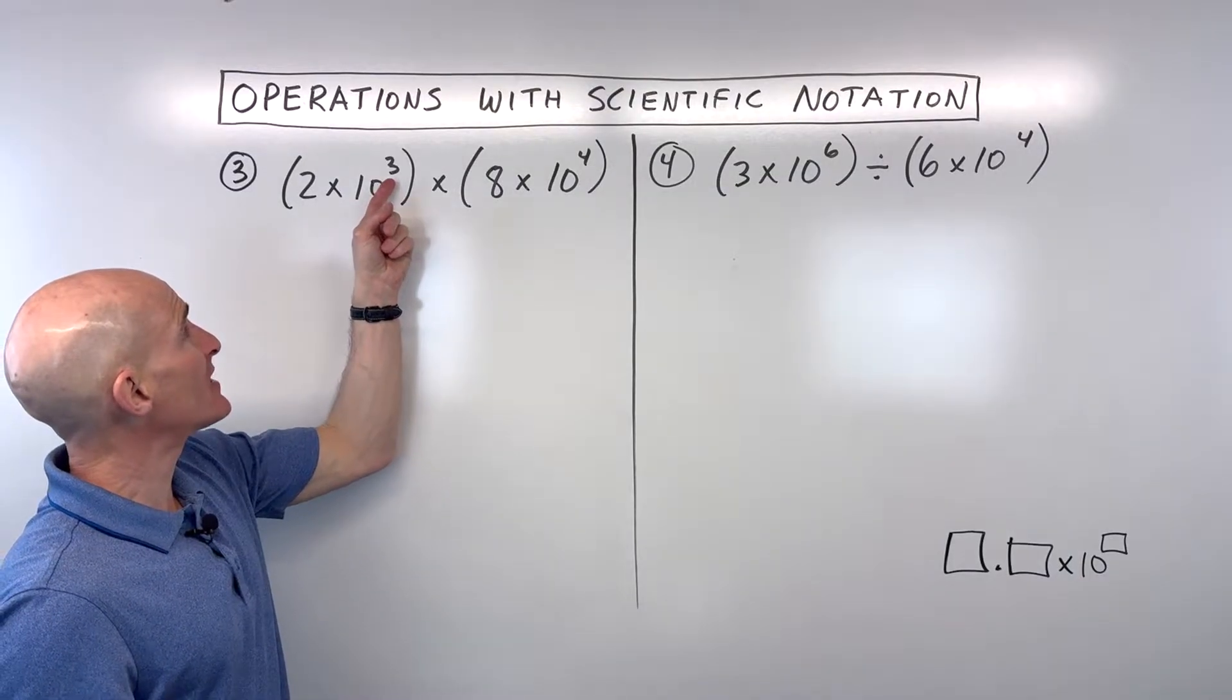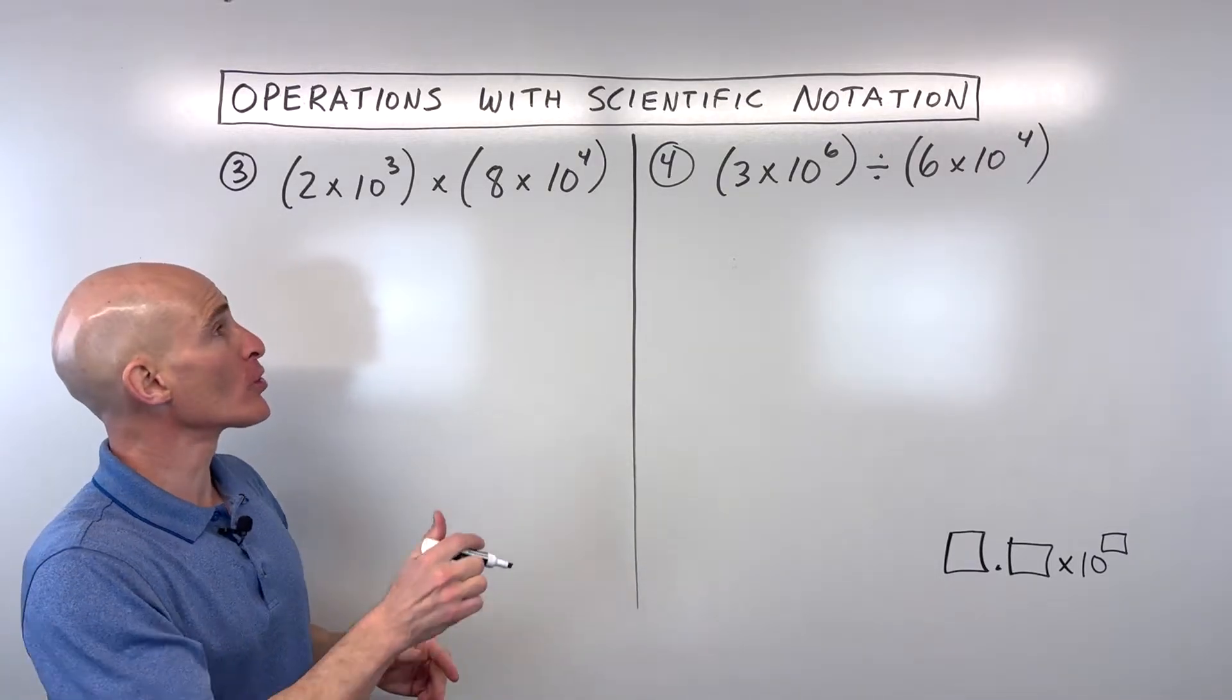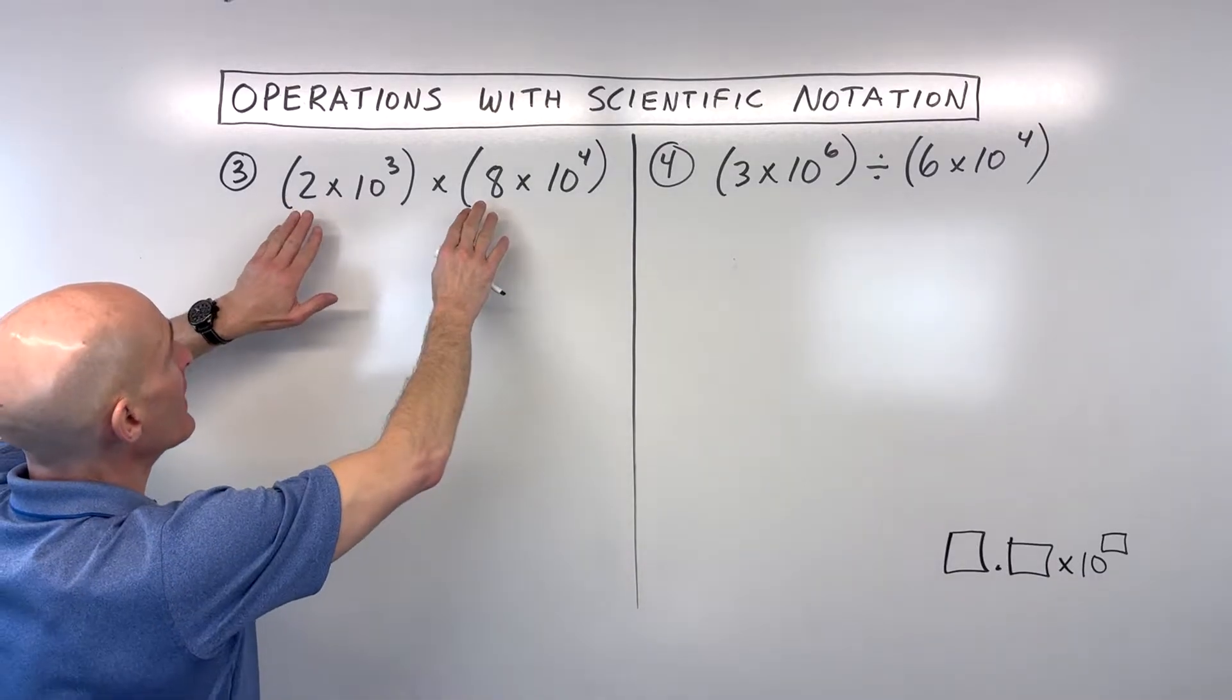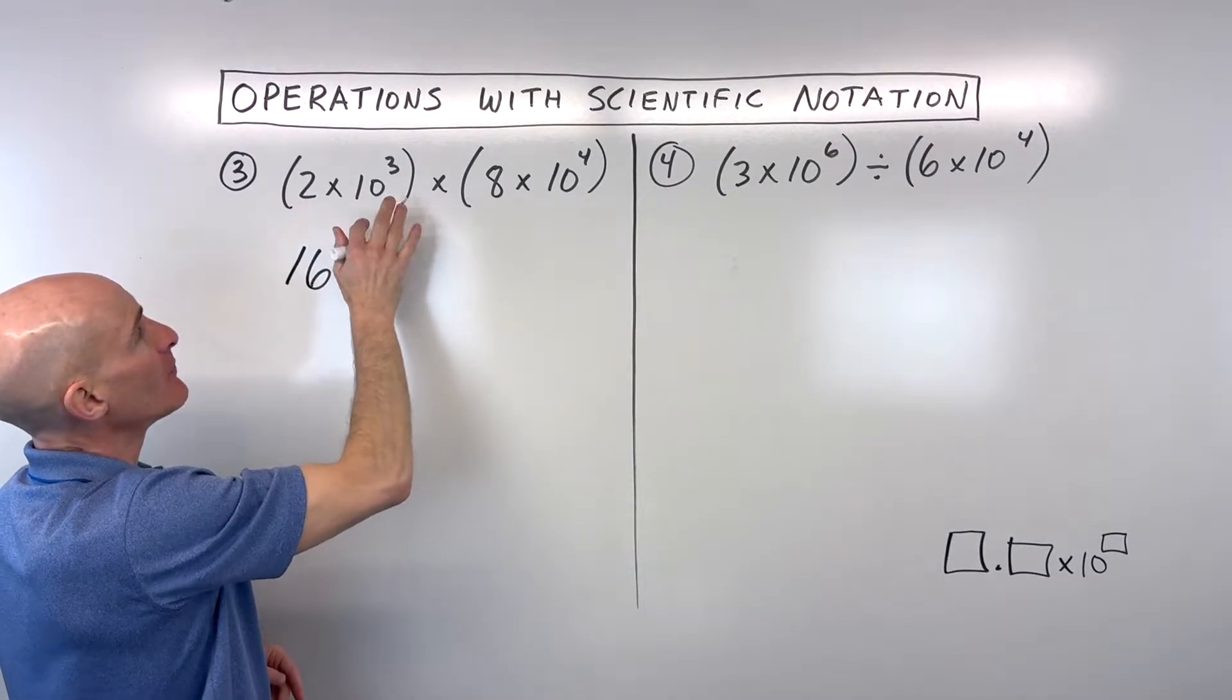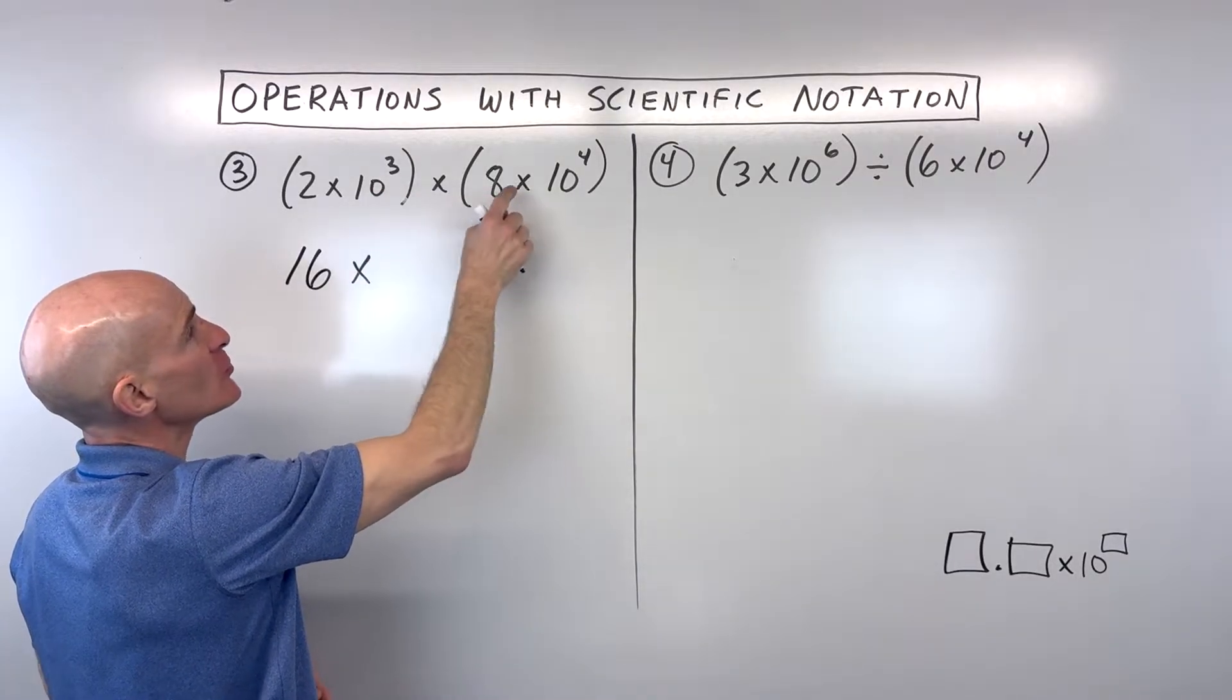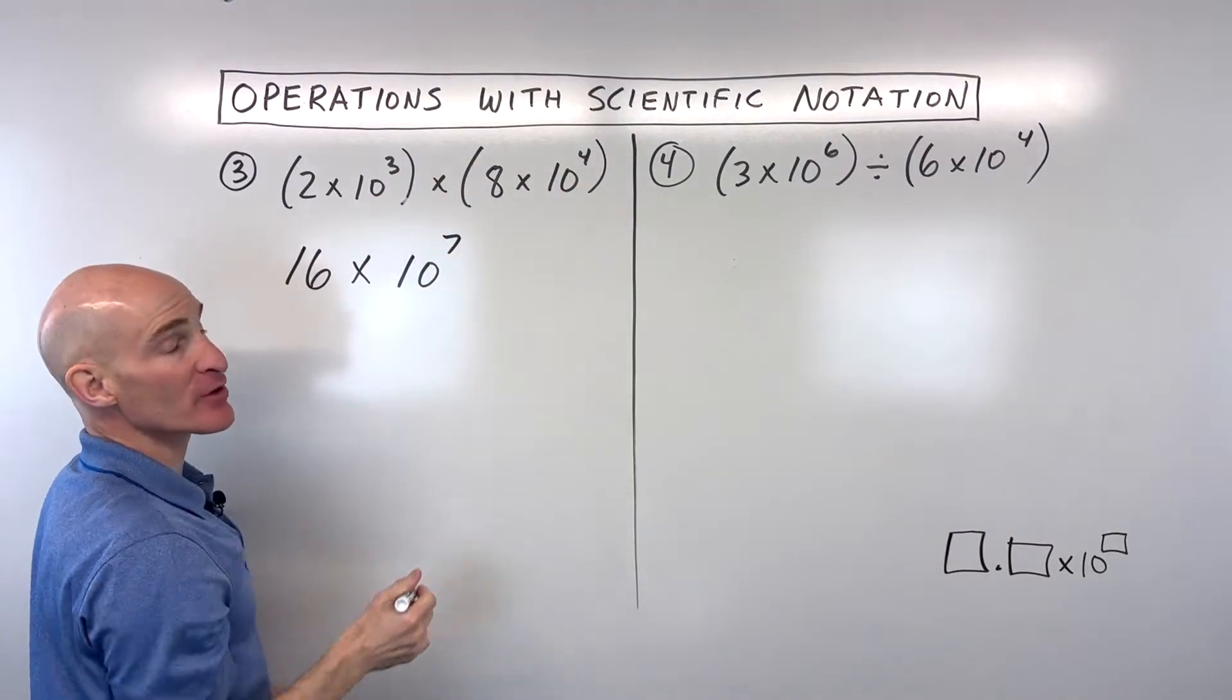For number 3, we have 2 times 10 to the third power times 8 times 10 to the fourth power. Now when you're multiplying, you don't have to worry about these being the same orders of magnitude. What you want to do is multiply these numbers together and the powers of 10 together. So here we have 2 times 8, which we know is 16. But when we multiply these powers of 10 together, 10 cubed times 10 to the fourth, when you multiply and you have the same base, you add the exponent. So 3 plus 4 is 7.